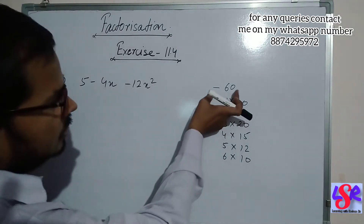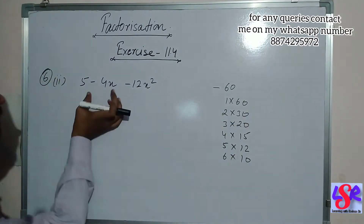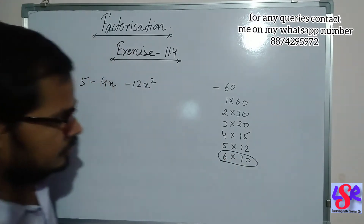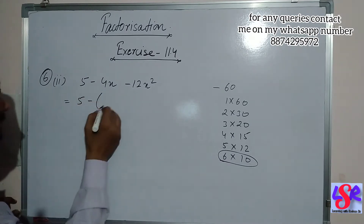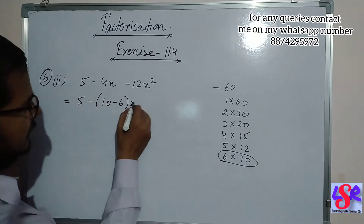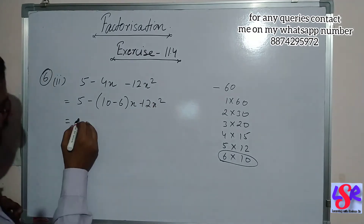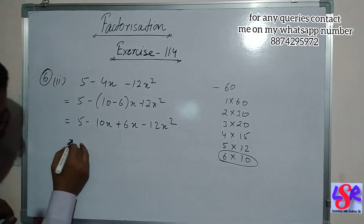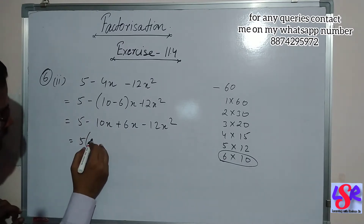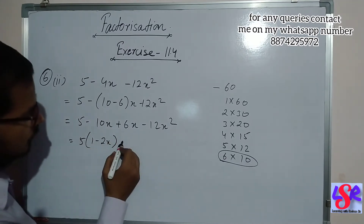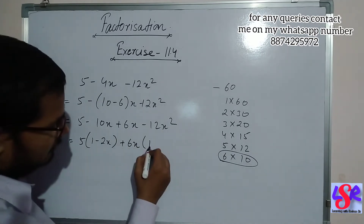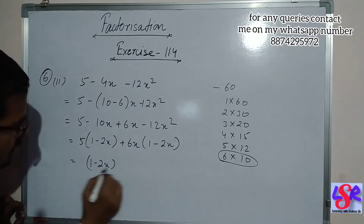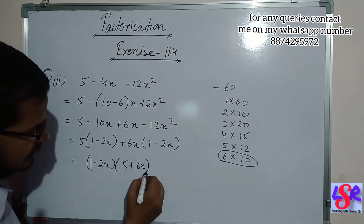As the product is a negative number, we subtract one factor from another to get 4. We see that 10 minus 6 gives 4. So this is written as 5 minus 10x plus 6x minus 12x square. Taking 5 common from the first two gives 1 minus 2x, and taking plus 6x common from the last two also gives 1 minus 2x. Taking 1 minus 2x as common, the answer is 1 minus 2x into 5 plus 6x.